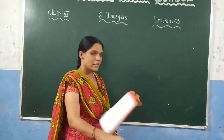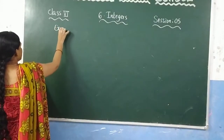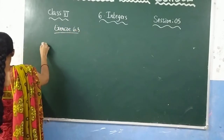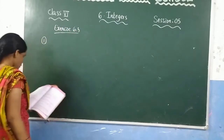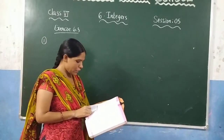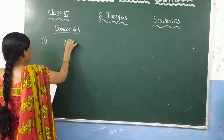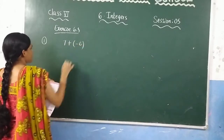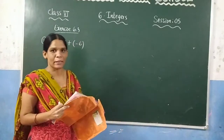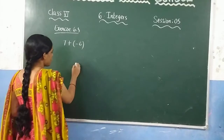Now we are going to solve Exercise 6.3. The first question says: add the following integers using the number line. The first problem is 7 plus negative 6. You need to find the value using the number line. Draw the number line first.